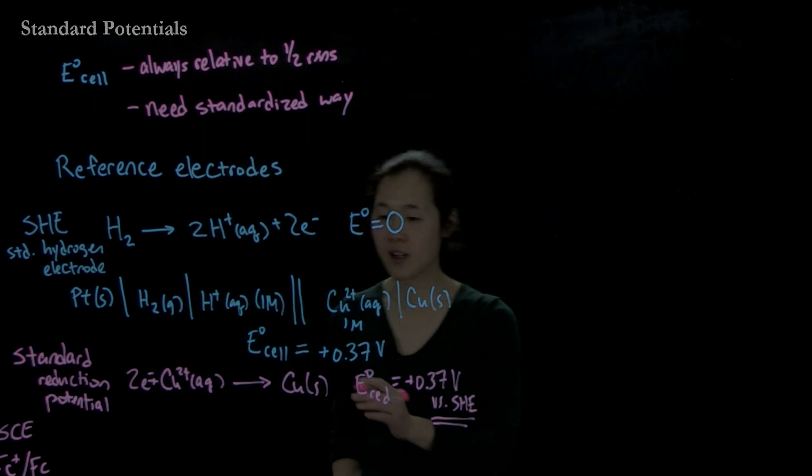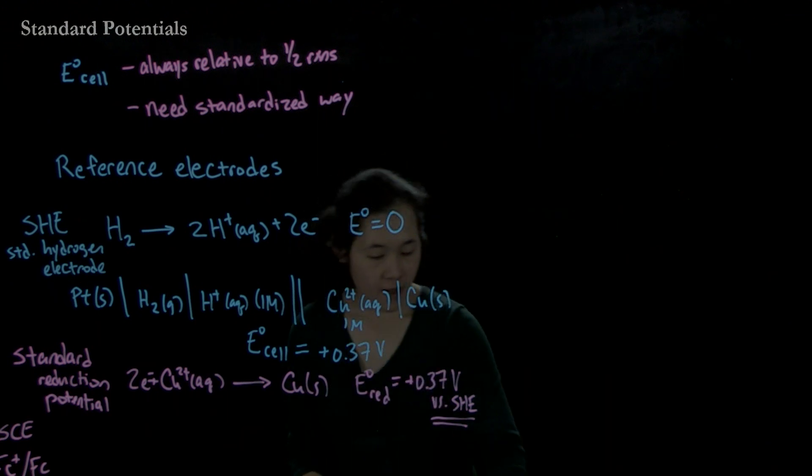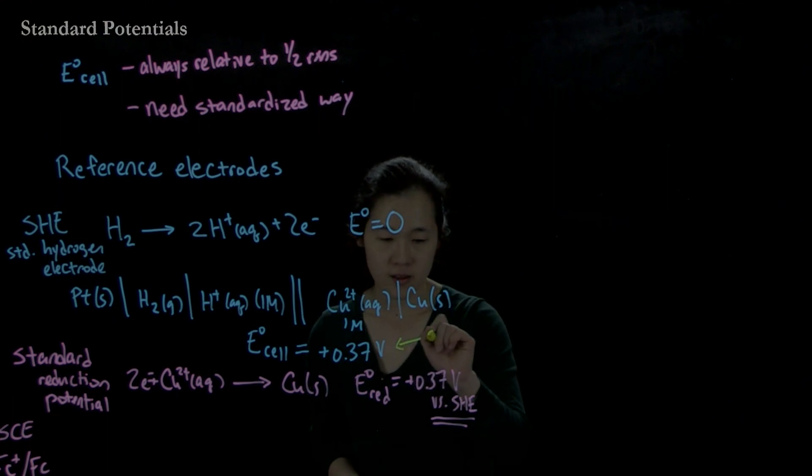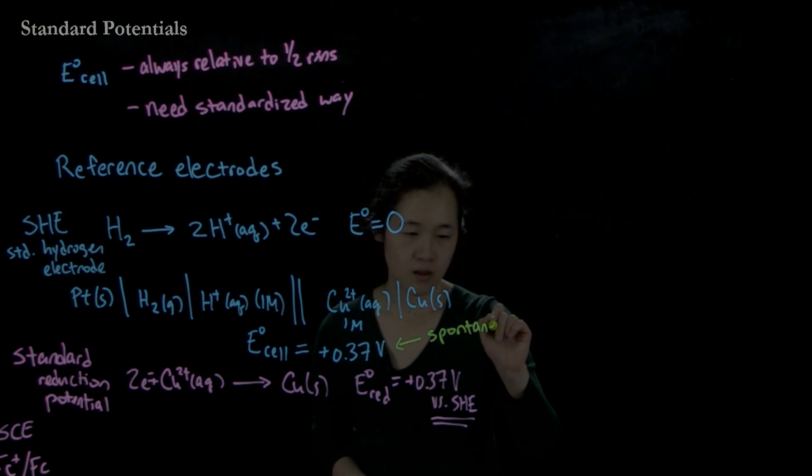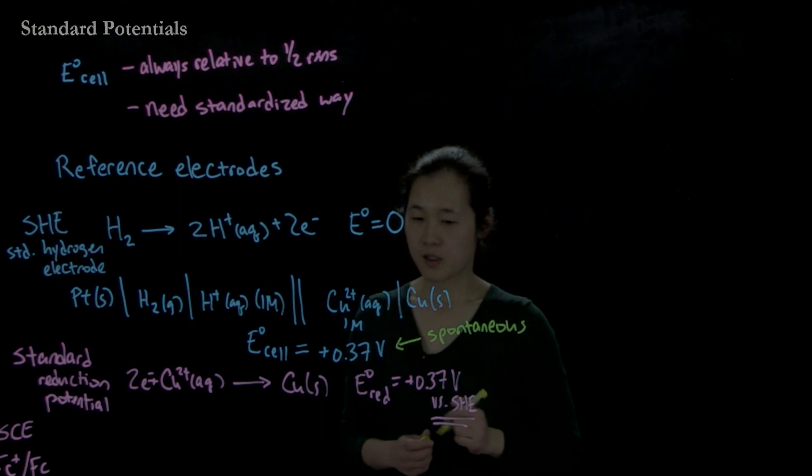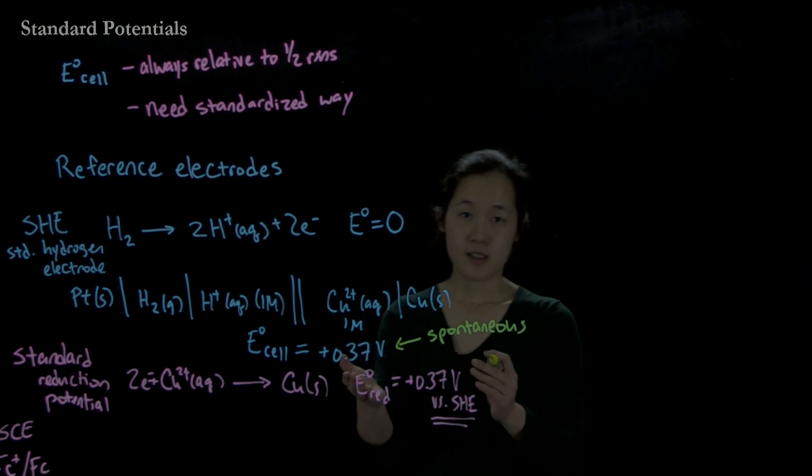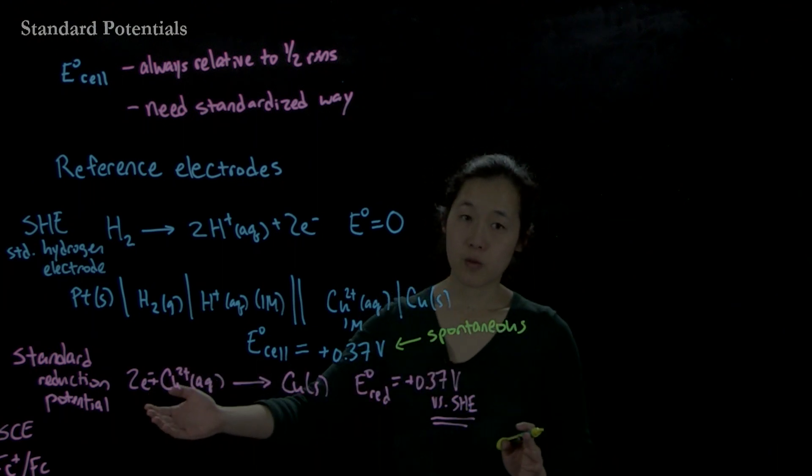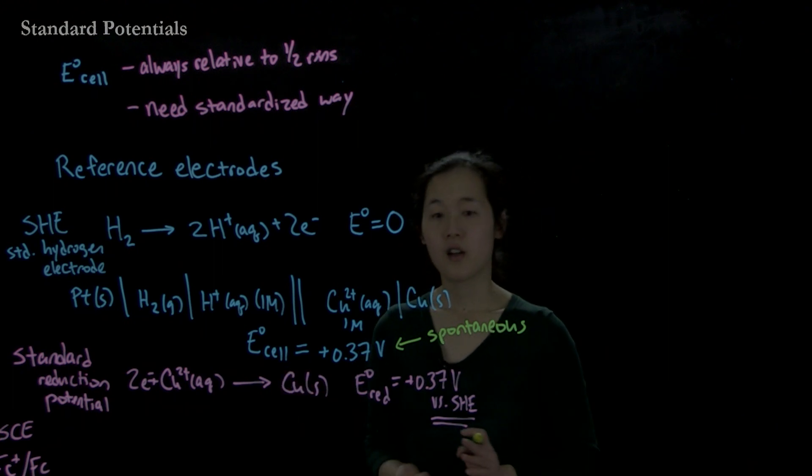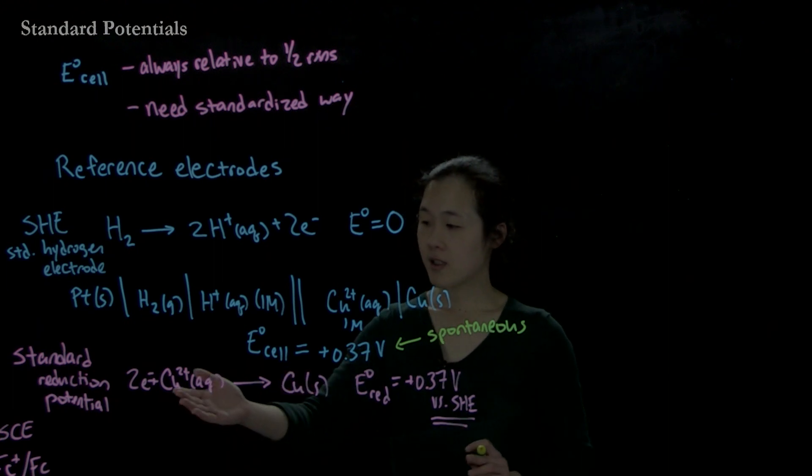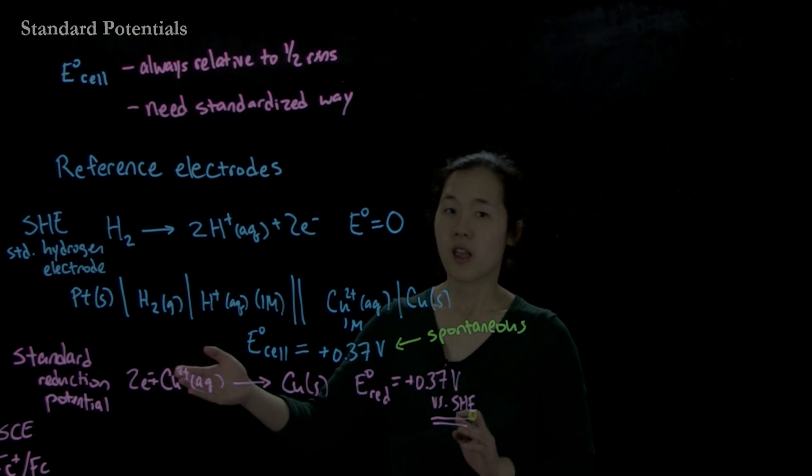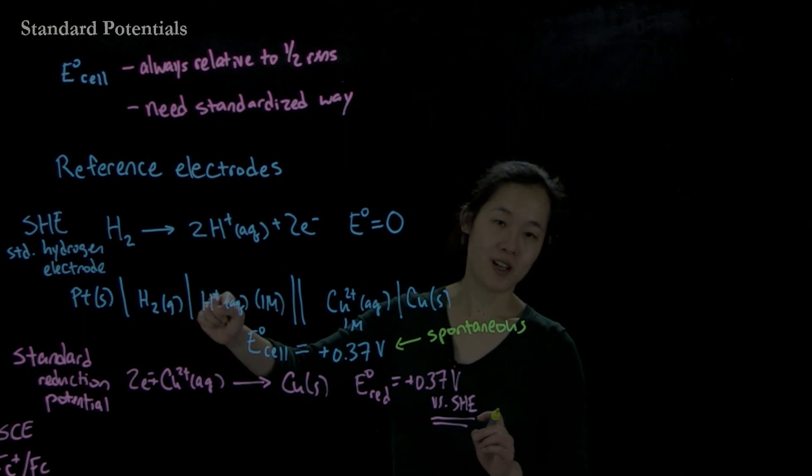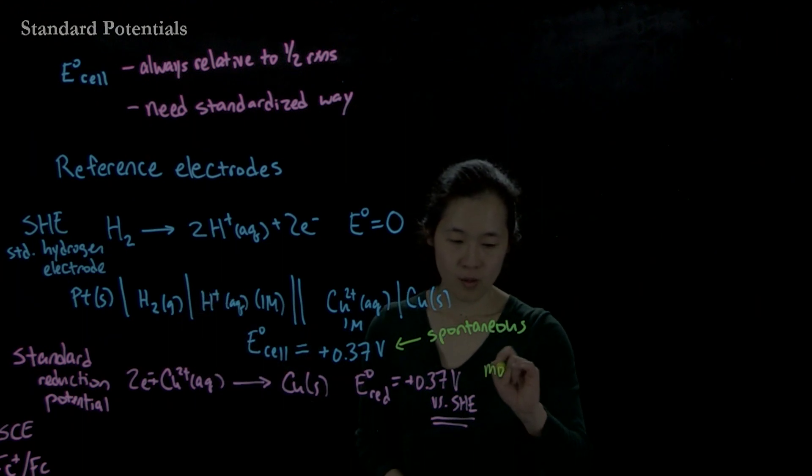One thing to remember is, if E cell is greater than zero, we said this was spontaneous. So what this means is that the more positive it is, the more positive a reduction potential is, the more likely this copper 2+ wants to be reduced to copper zero. We could consider by saying this is a positive number, copper 2+ is more oxidizing than hydrogen gas, or more oxidizing than protons.